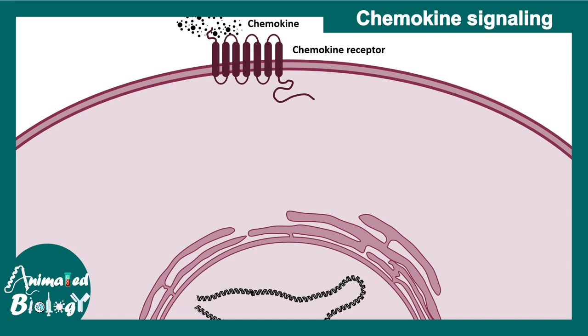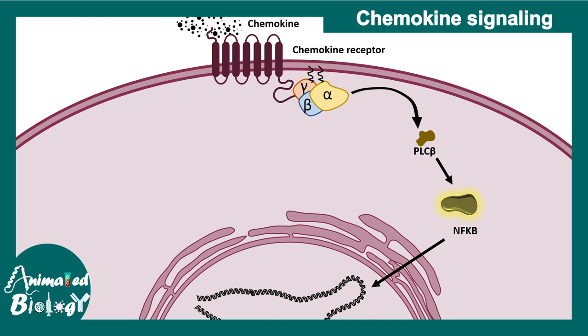Ligand binding leads to activation of the trimeric G protein, and it can start different cascades of signaling. On one hand, it can activate phospholipase C and ultimately leads to activation of NF-κB and translocation of NF-κB into the nucleus. This transcription factor can transcribe many genes, including genes for inflammatory cytokines and many other chemoattractant factors.